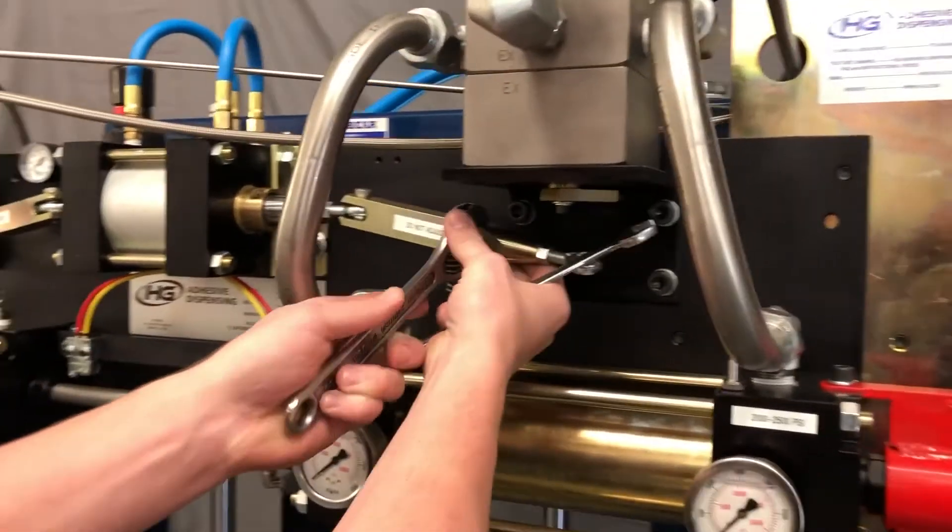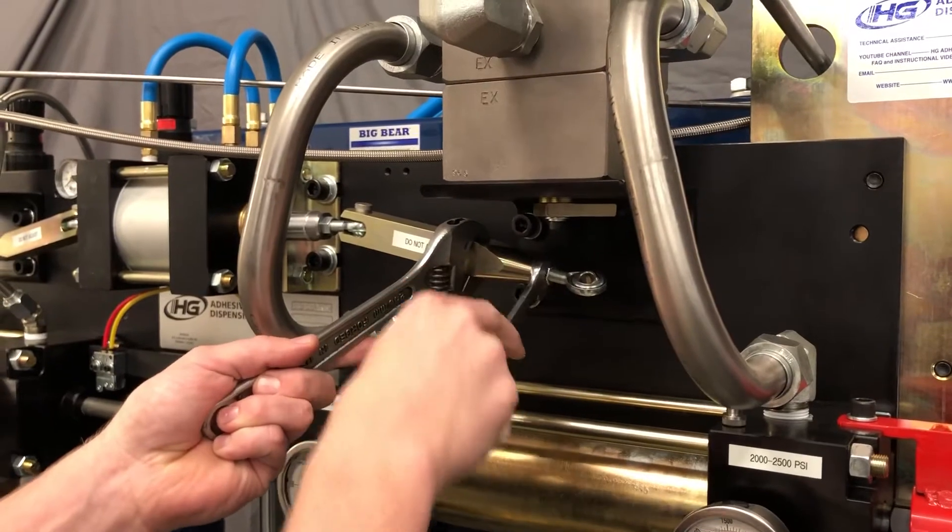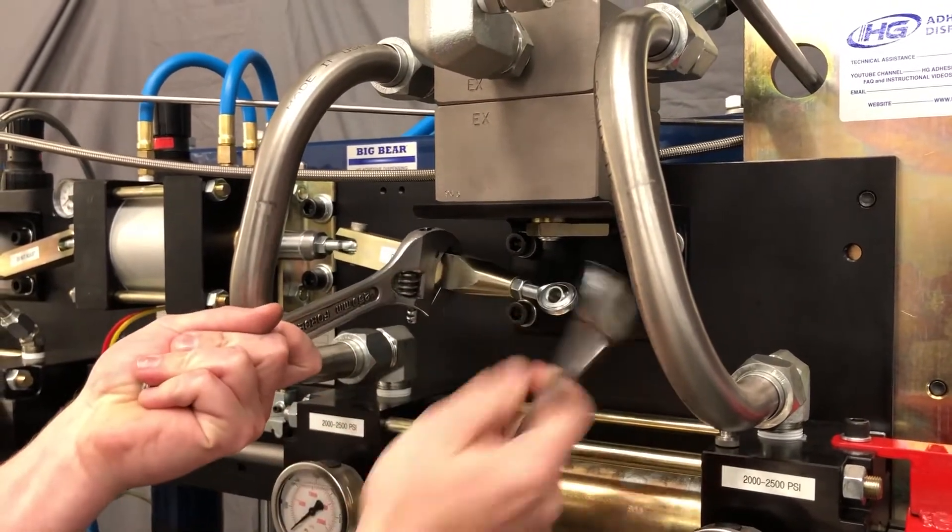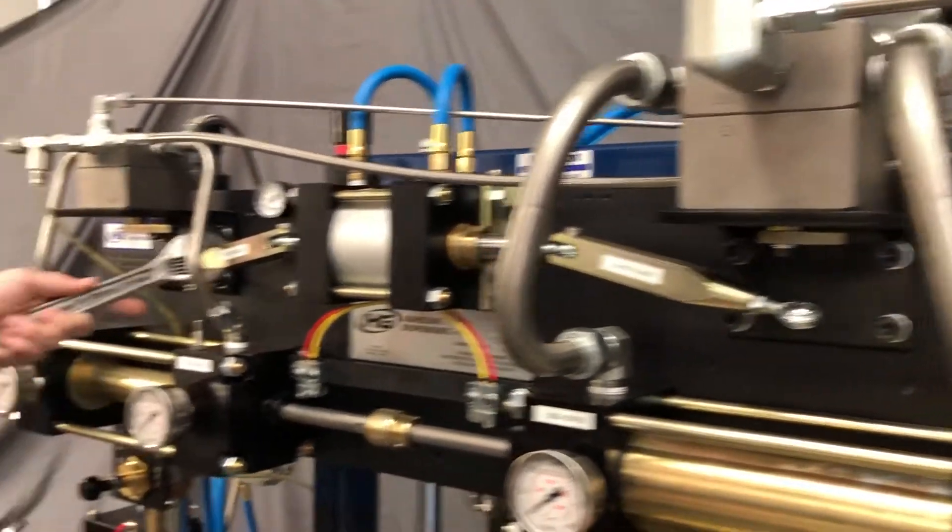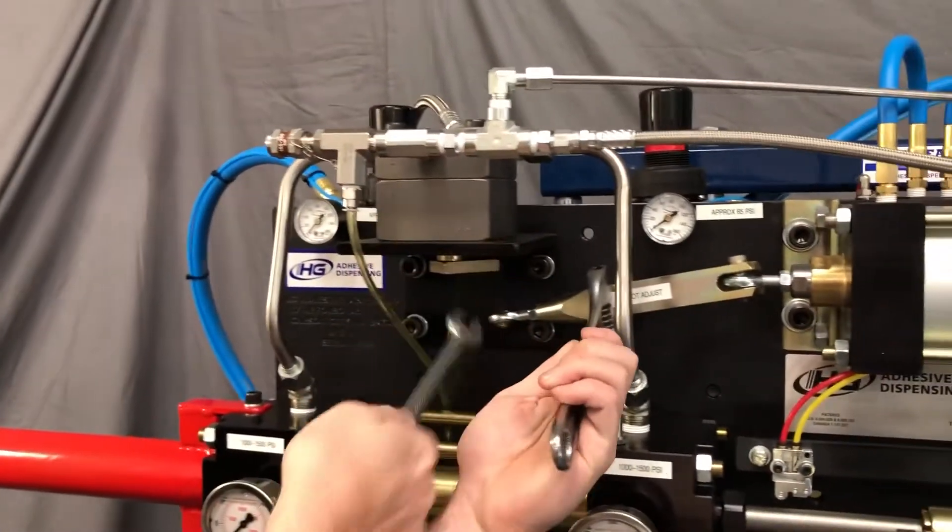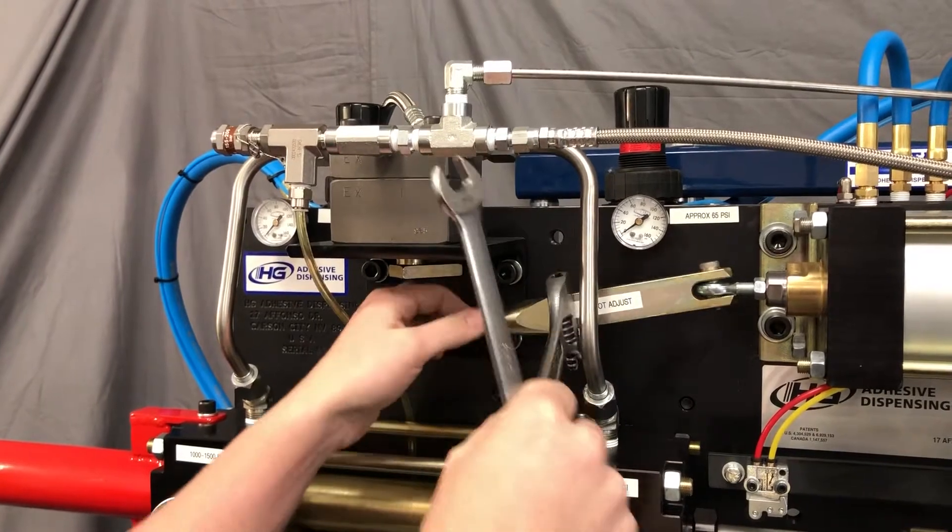I'm going to use an open end wrench, 9/16ths, to loosen this locking nut right here. I'll do that on both sides. That's going to allow that eye bolt to be adjusted.